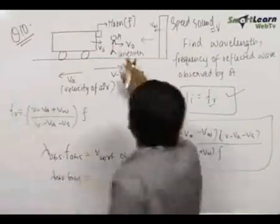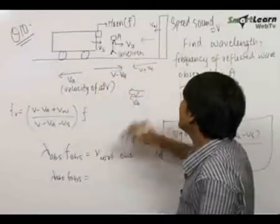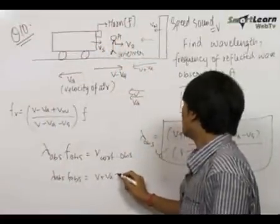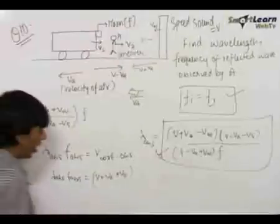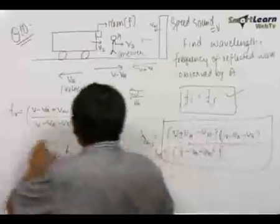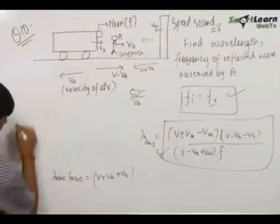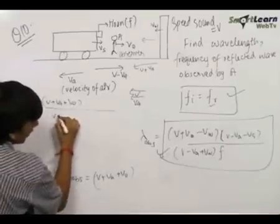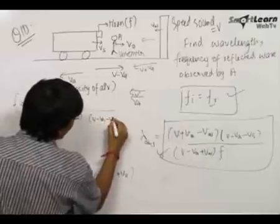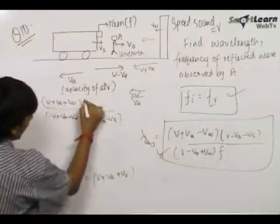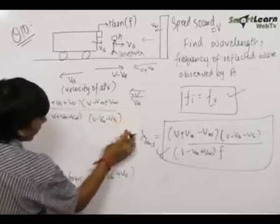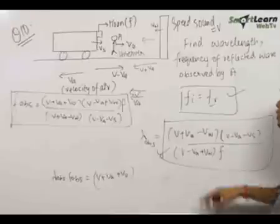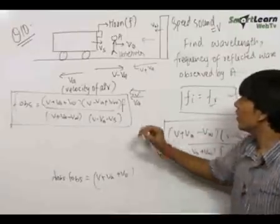To find frequency observed by A, we use: lambda observed × F observed = velocity of sound with respect to observer A. Sound travels in this direction with V plus VA; for observer A moving right with V0, we add V0 to get V plus VA plus V0. Substituting lambda observed, the frequency observed by A is: F_observed = [(V + VA + V0) × (V - VA + Vw) × f] / [(V + VA - Vw) × (V - VA - VS)]. These are the final answers for frequency and wavelength observed by A.